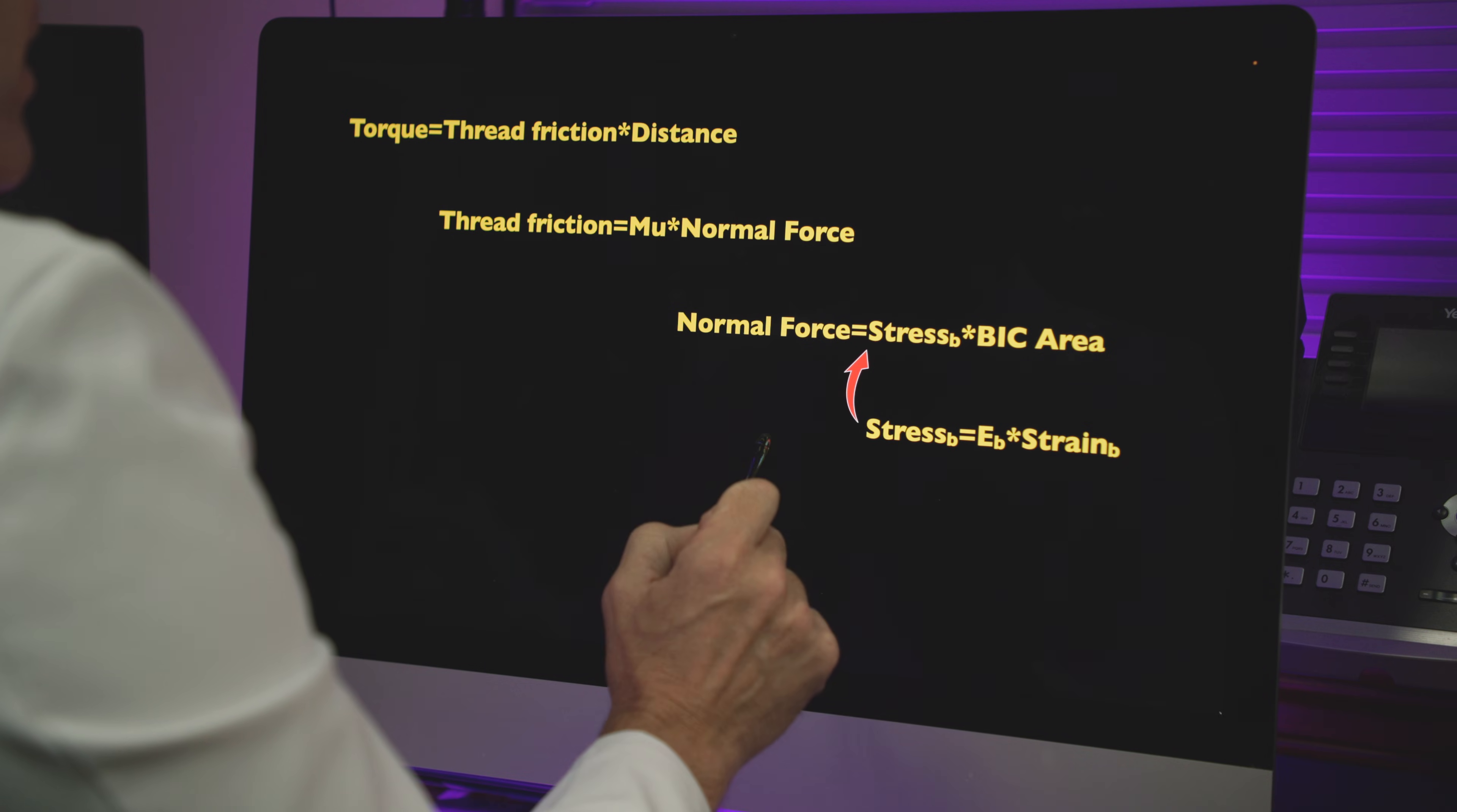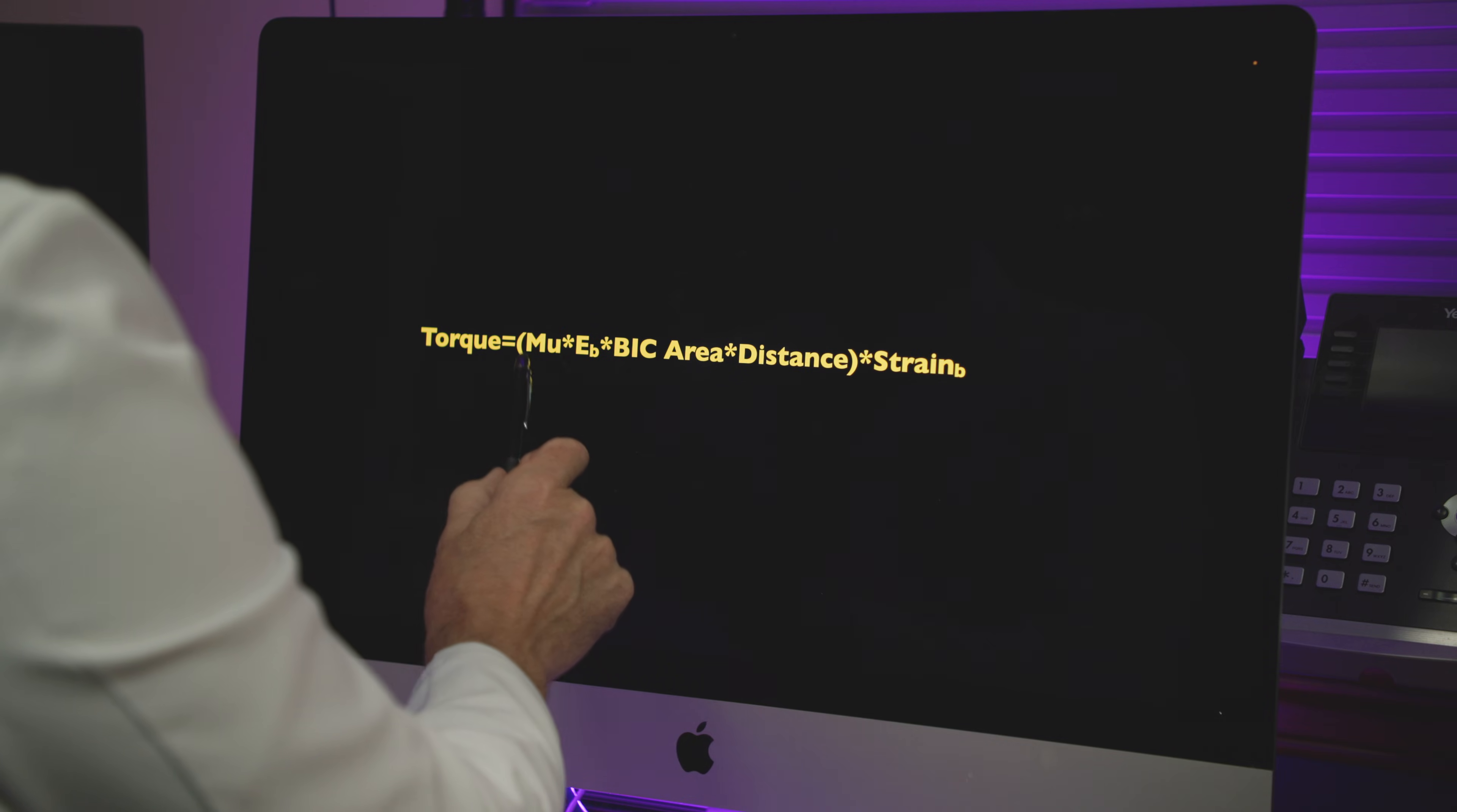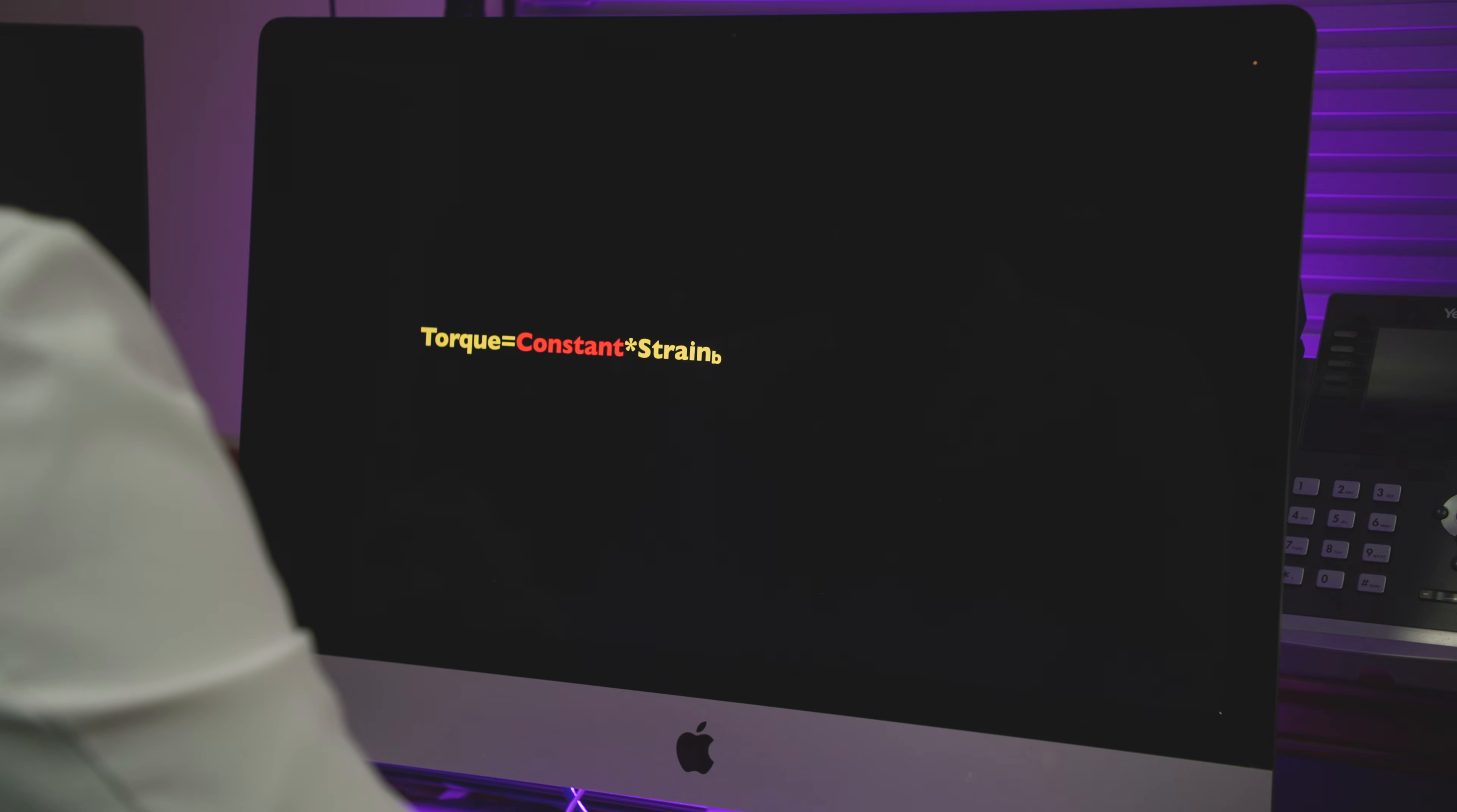We're going to insert this stress into that equation. We're going to insert this normal into that equation, and we're going to insert this friction into that equation, and we get this. All of this can be rearranged to this. Everything inside of the parentheses is a constant. So if I replace everything here with the word constant, what you get is this. Torque is equal to some constant for that given case times the strain in the bone.